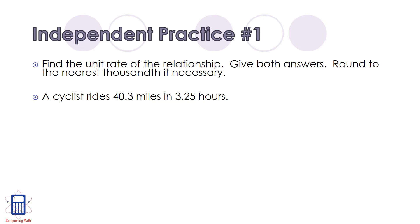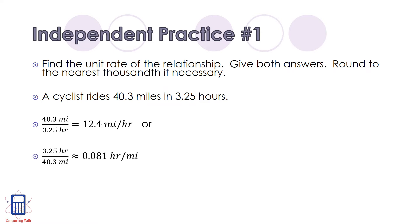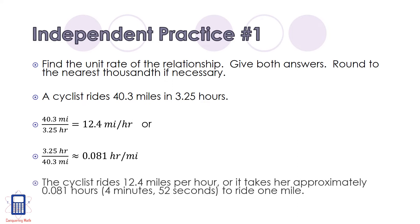Let's take a look. The first thing we need to do is divide 40.3 miles by 3.25 hours, which gives us a unit rate of 12.4 miles per hour. The other option is to divide 3.25 hours by 40.3 miles, which gives us approximately 0.081 hours for one mile. This means that the cyclist rides 12.4 miles per hour, or it takes her approximately 0.081 hours — 4 minutes and 52 seconds — to ride one mile.